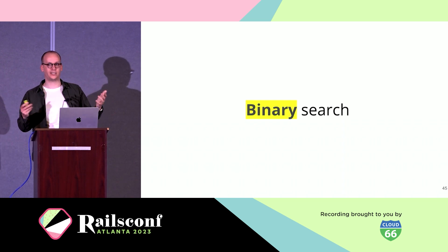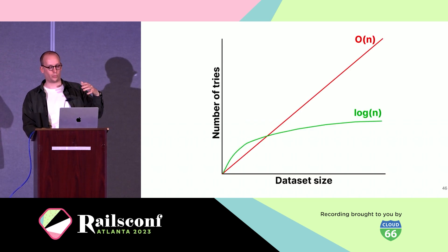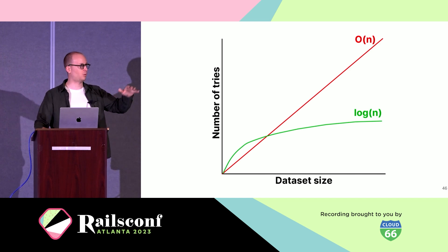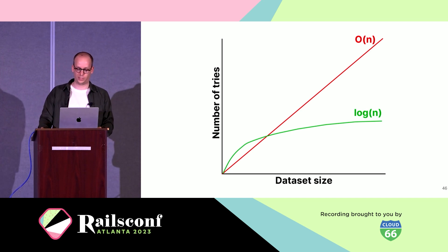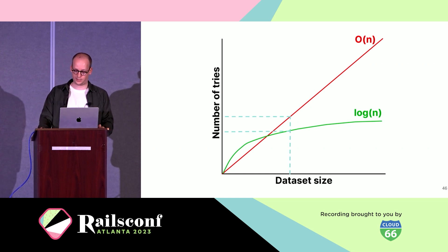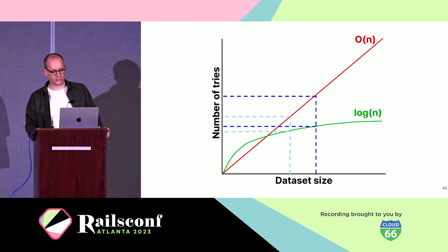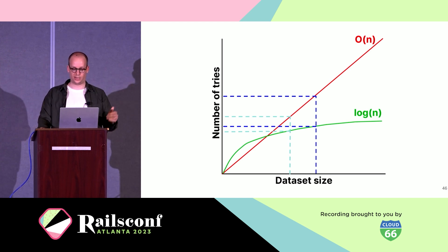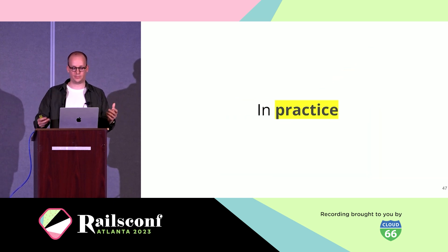Some of you will recognize this technique — this is plain old binary search. This is what tools like git bisect use. Why is it interesting? Binary search has logarithmic complexity — it follows the green line on the complexity chart. Instrumenting each job individually would be like the red line, which is linear complexity. For our dataset size of 120 suspect jobs, binary search requires far fewer tries to find the leaking job, and for bigger datasets it scales much better — which is great since we have a pretty large dataset.